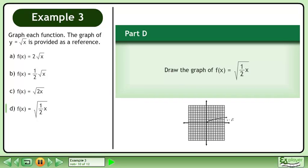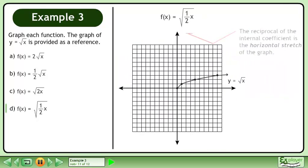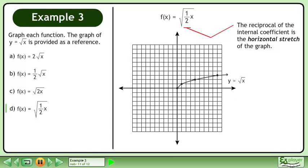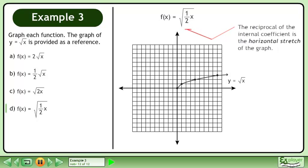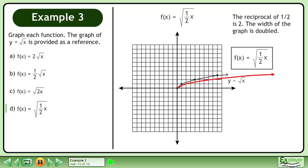In Part D, we'll draw the graph of f equals the square root of 1 half x. The reciprocal of the internal coefficient is the horizontal stretch of the graph. The reciprocal of 1 half is 2, so the width of the graph is doubled.